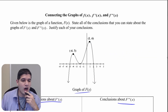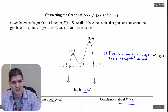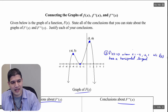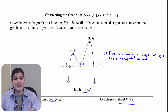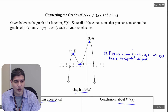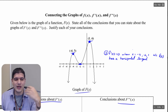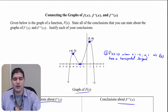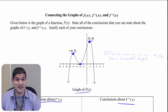We also know that f prime is going to be equal to zero at three points: x equals negative 4, x equals negative 2, and x equals 1. The reason f prime is zero there is because those x-values have horizontal tangents, which means f prime equals zero.